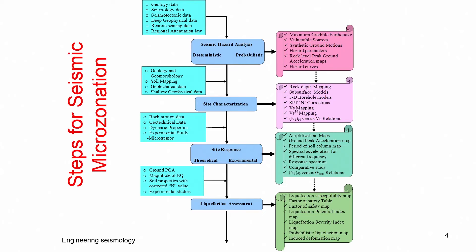As we have seen, microzonation consists of six major components producing maps, with a seventh step integrating all results into a final output. The first step is direct ground shaking at the bedrock level, which is the most important for microzonation and applicable to all cities. This produces a PGA distribution map, synthetic ground motion, response spectrum, and probabilistic and deterministic hazard levels such as 2% probability of exceedance in 50 years and 10% probability in 50 years.